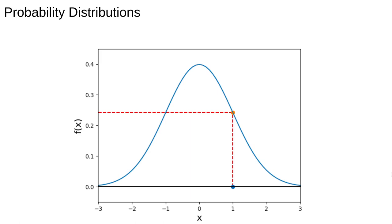For a continuous distribution like the one drawn here, the values are actually relative probabilities. However, you won't go too far wrong at this level by treating continuous and discrete distributions in the same way and thinking of the values as probabilities. In practice, you'll be working with finite data sets anyway.